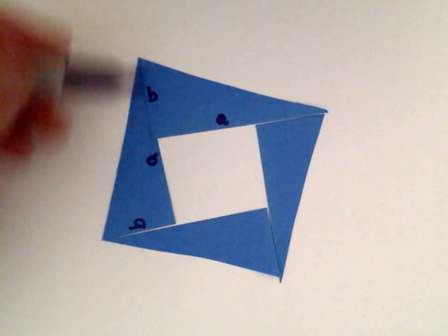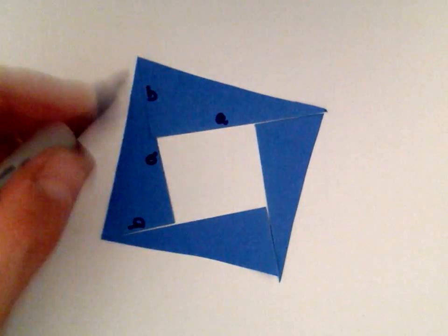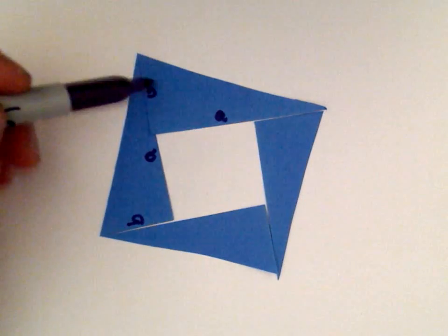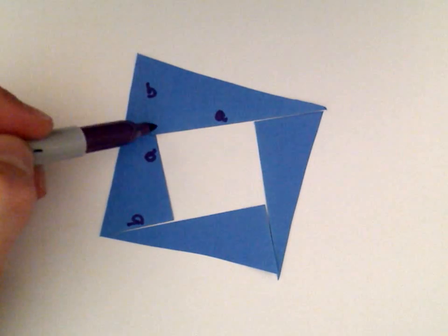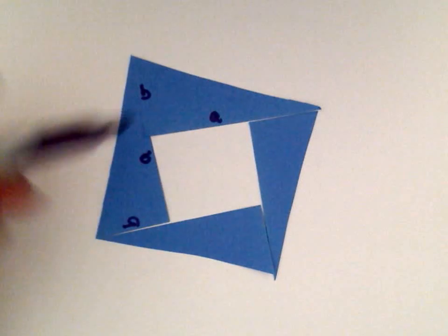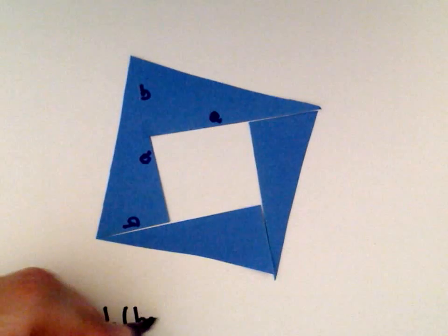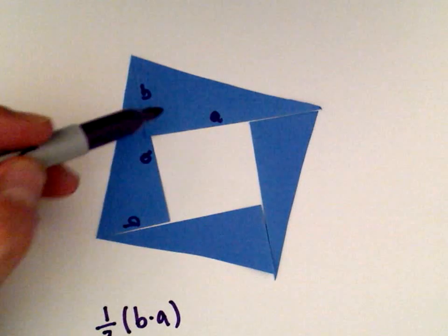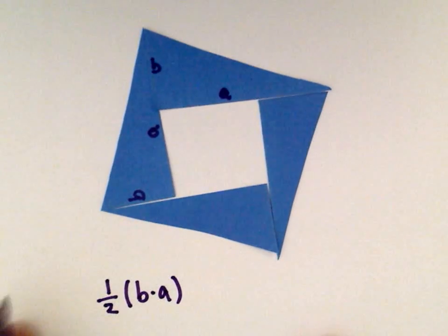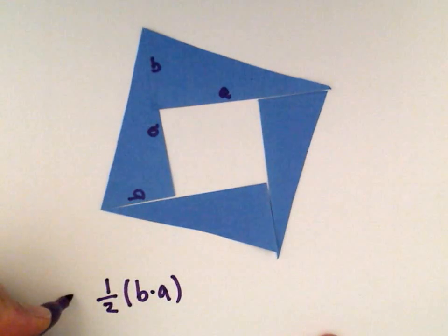We've got to add up the area of the four triangles. The area of a triangle is just one half the base times the height. So we'll have one half the base times the height. But we have four of those, so we'll have to simply multiply that by four.